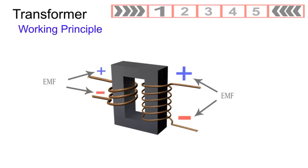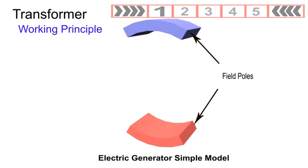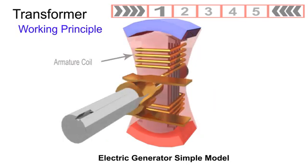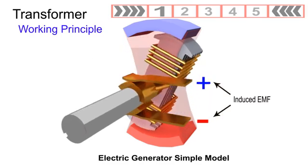In the generator, the flux is substantially constant in magnitude. The flux linking the armature coils is changed by relative mechanical motion of flux and the coils.